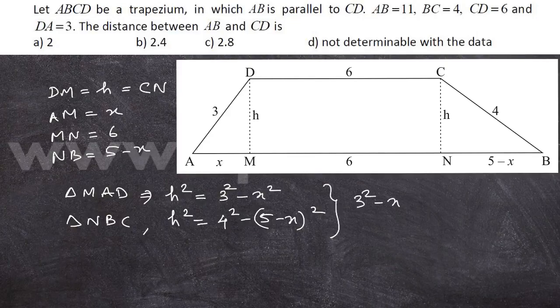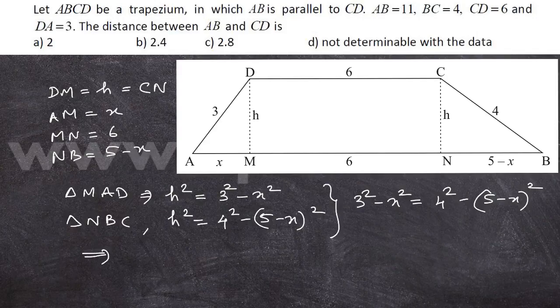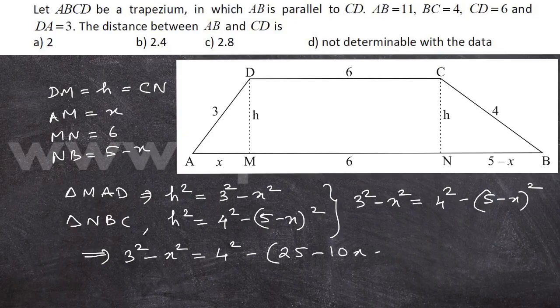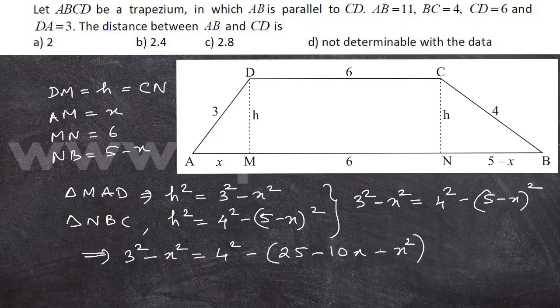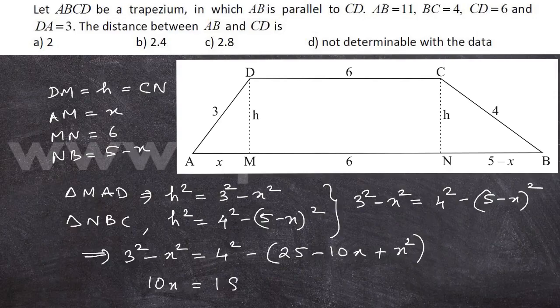We get 3 square minus x square is equal to 4 square minus (5 minus x) whole square. That gives us 9 minus x square equals 16 minus 25 plus 10x minus x square. The x squared terms get cancelled. We have 10x is equal to 18, so x is equal to 1.8.